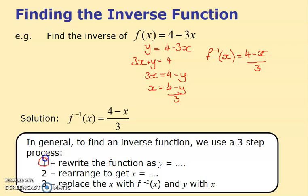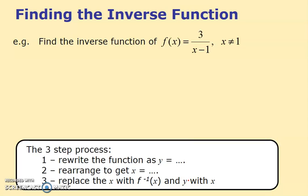Here's a summary of the three-step process: Step 1 — rewrite the function as y equals. Step 2 — rearrange that equation to make x the subject. Step 3 — replace x with f⁻¹ and replace y with x. It's important you do that final step; some people forget it and lose a mark.